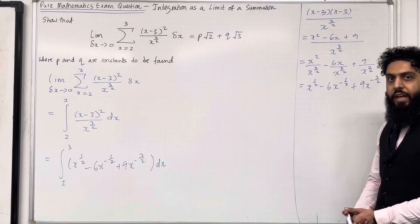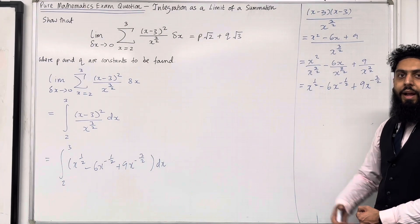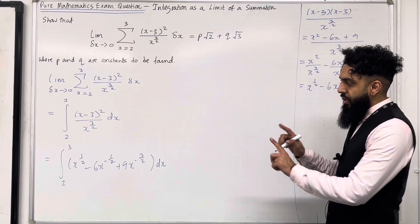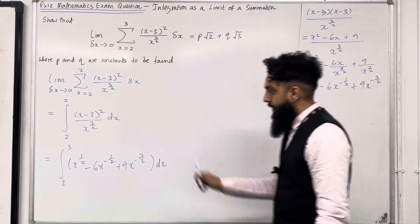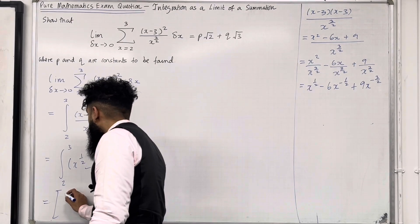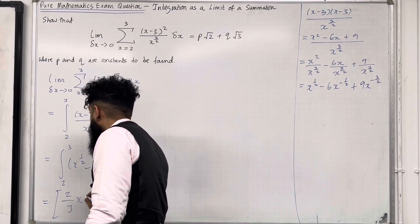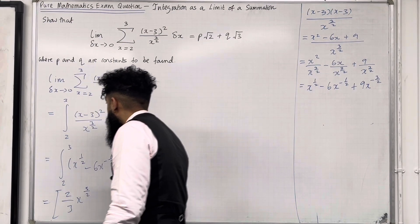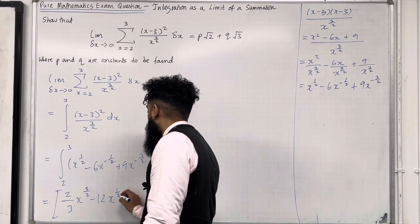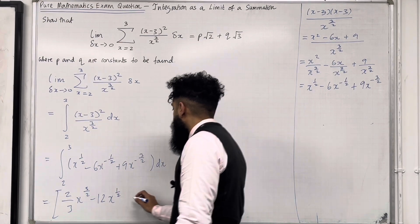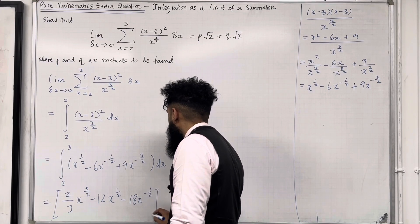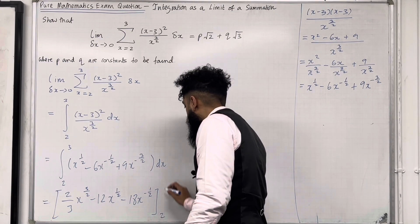Now I can use year 1 integration — add 1 to the power and divide by the new power. Doing term-by-term integration: the first term integrates to 2/3 x to the power 3/2, the second term integrates to minus 12 x to the power 1/2, and the third term integrates to minus 18 x to the power minus 1/2. Evaluated with lower limit 2 and upper limit 3.